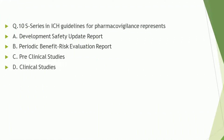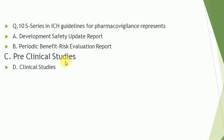Question number 10: what does the S series in ICH guideline for pharmacovigilance represent? The correct answer is: pre-clinical studies.